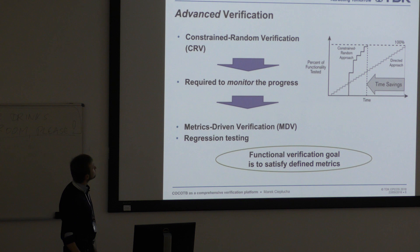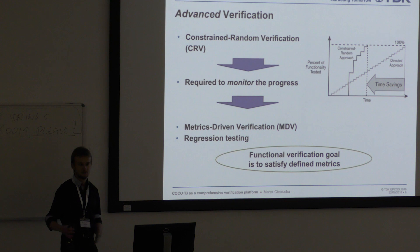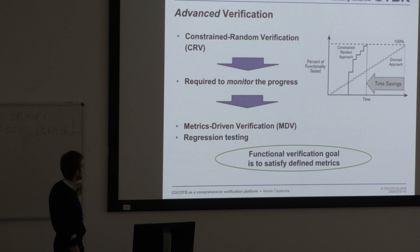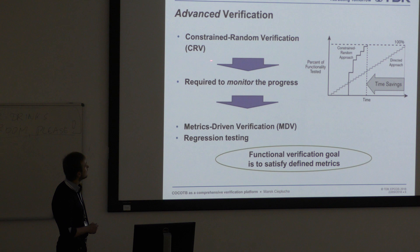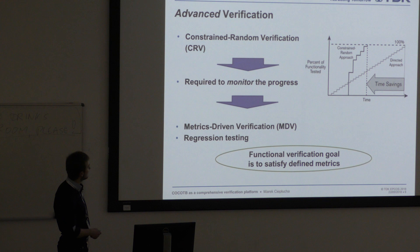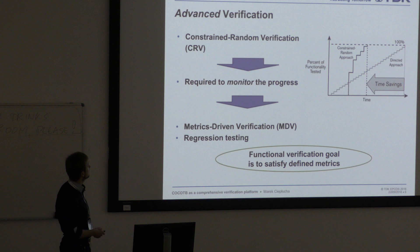What is advanced verification? These are concepts very much linked to professional verification sign-off that you observe in companies. First is constraint random verification — applying random stimuli to your design. This approach gives a high boost in terms of testing functionality and achieving coverage goals. But when you go random you have to monitor what you actually test, and here comes another concept: metrics-driven verification. Meeting these metrics using regression is the modern verification sign-off. The modern verification goal is to satisfy defined metrics — that's the definition of comprehensive verification.